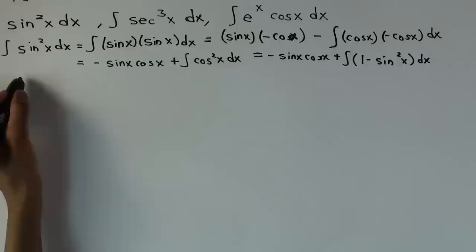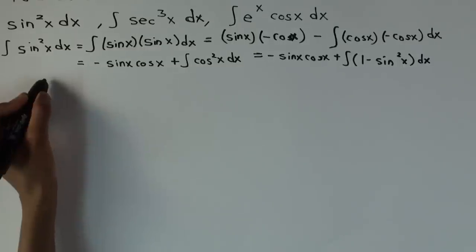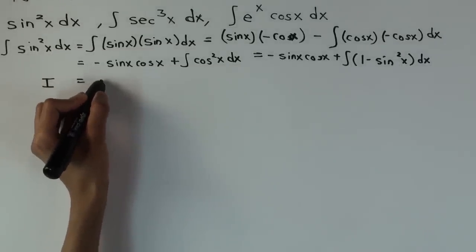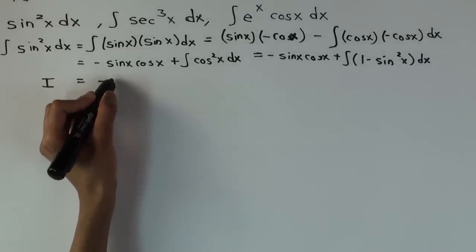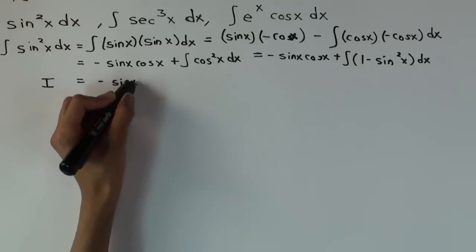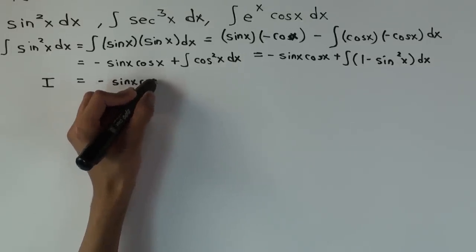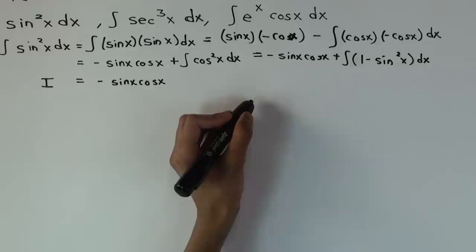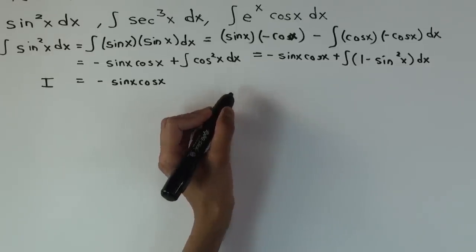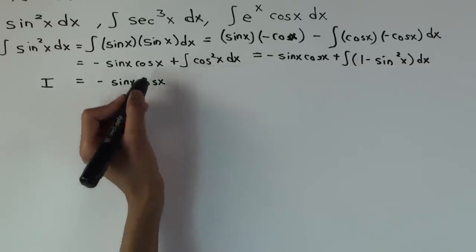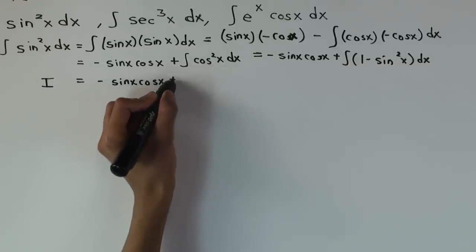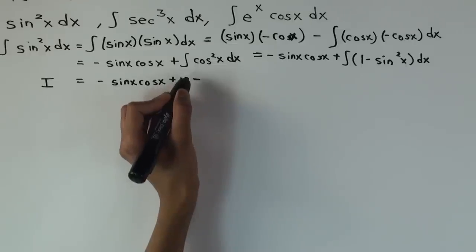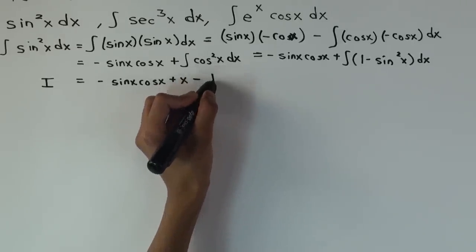So what you get is: I — which is just the left side — equals minus sin(x)cos(x) plus the integral of 1 dx. What's the integral of 1 dx? X. Minus the integral of sin²(x) dx. What's the integral of sin²(x) dx? I.